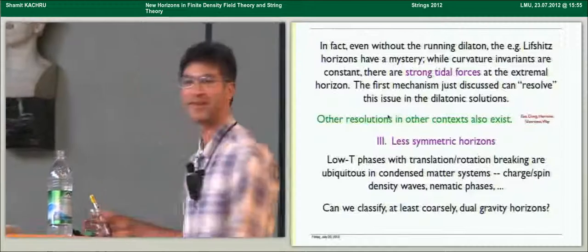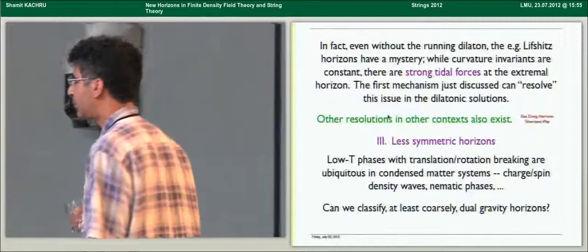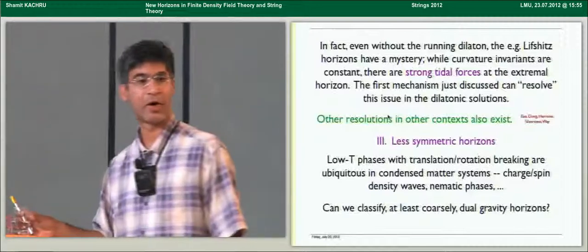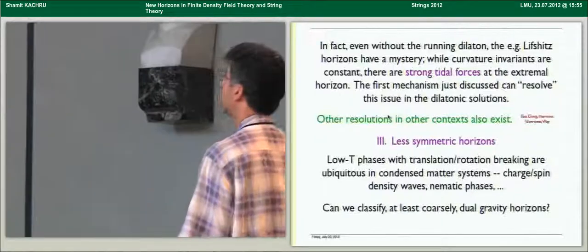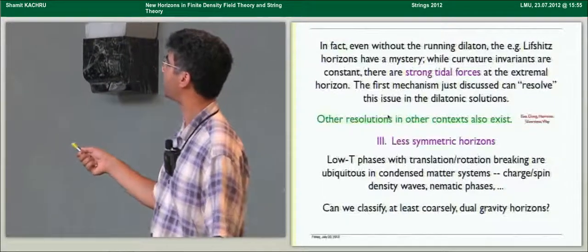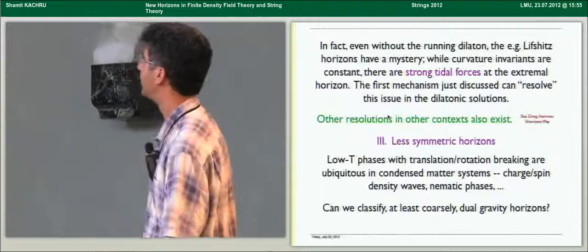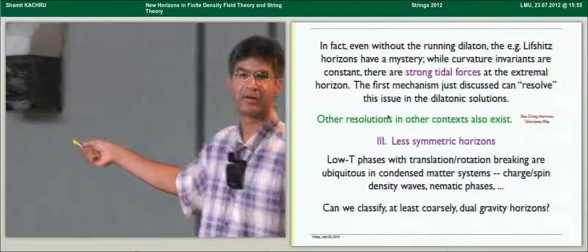Okay, so in the last five minutes, I'm going to move on to less symmetric horizons. Low temperature phases that are not homogeneous and isotropic, but that have translation and rotation breaking, are ubiquitous in condensed matter systems, charge spin density waves, nematic phases, and so on. So, again, let me abstract a question for black brane physics. Can we classify, starting at least coarsely, possible dual gravity horizons?